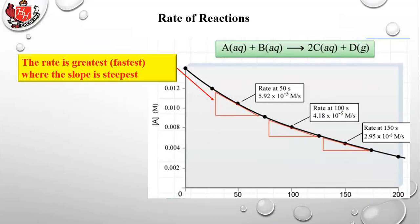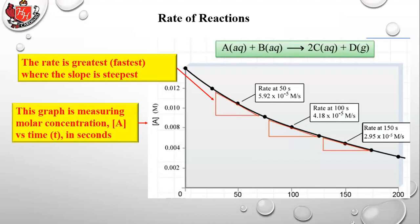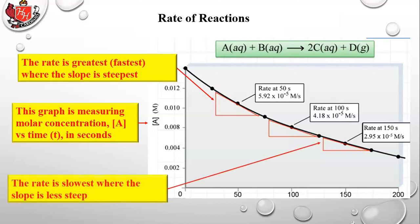The rate is fastest where the slope is steepest. Each of the horizontal lines in the red triangles represents 50 seconds on the horizontal axis. The vertical length of the first triangle on the left is greater. This graph measures molar concentration — denoted in square brackets as [A] — versus time. On the right triangle, for the same 50 seconds the vertical line is shorter, meaning the concentration of reactants is going down less fast. The reaction is going slower.